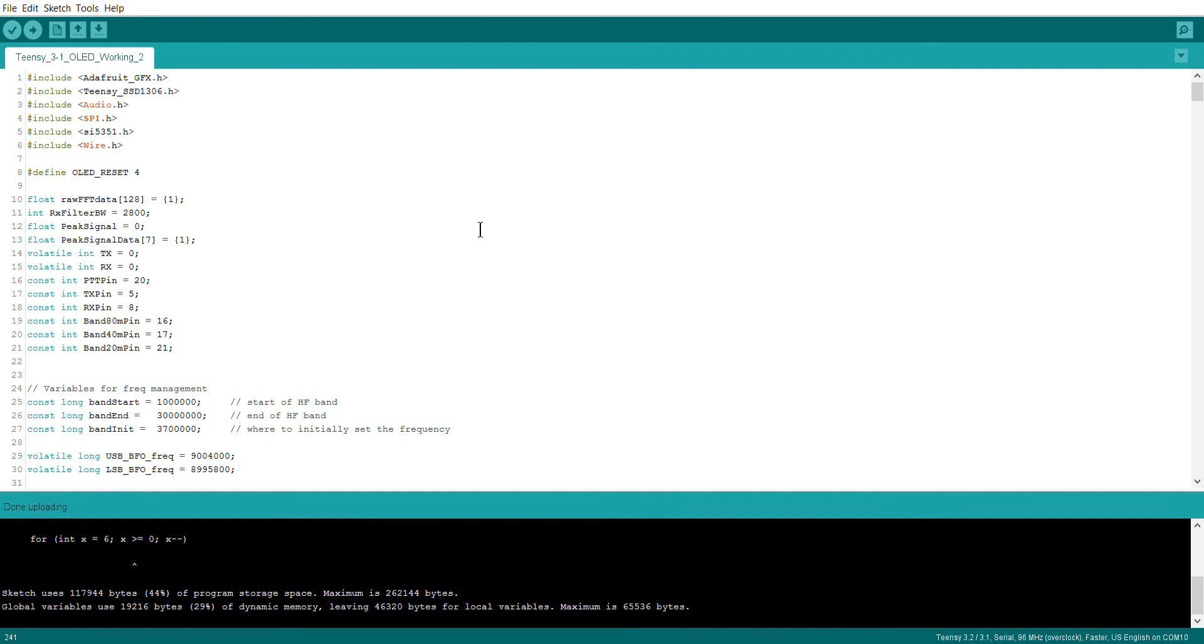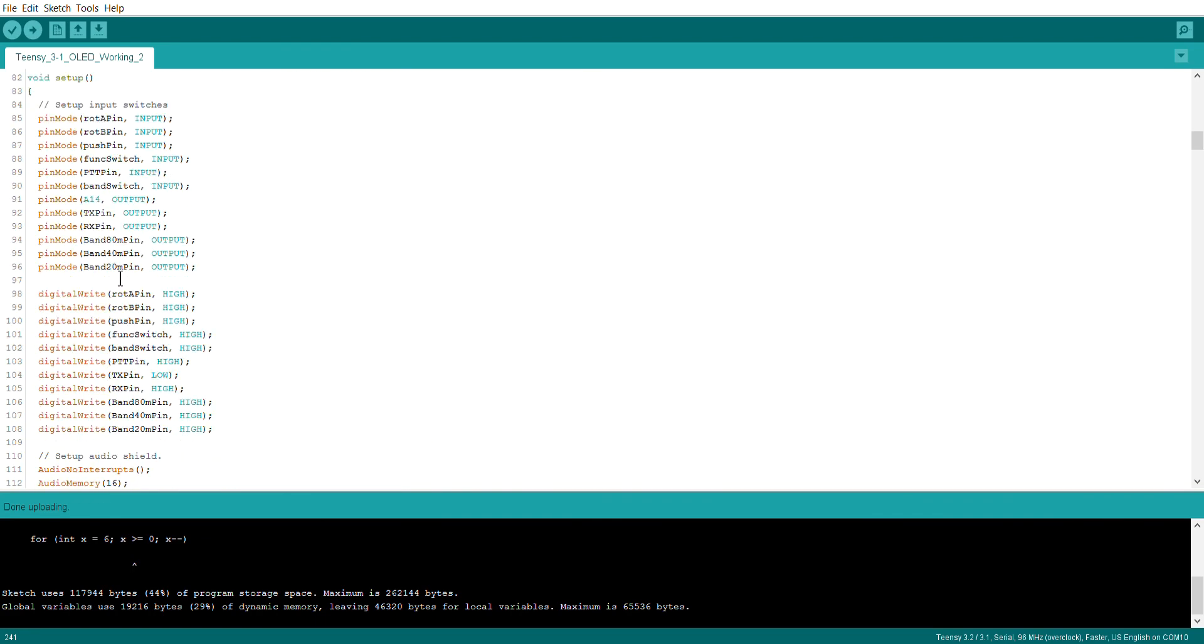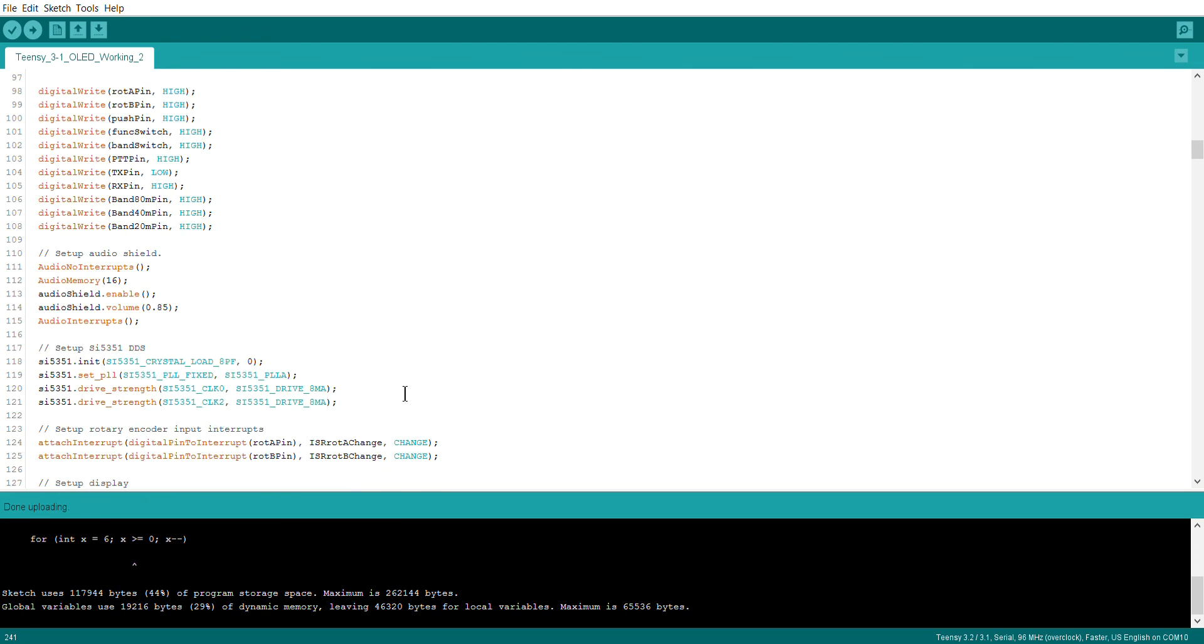So here's a look at the code. All I've done at the end, I've assigned three digital pins. So they're notionally called band 80 pin, 40, and 20, so I had three available pins on the teensy, and they get declared as output pins, and initially set high. So high means that that particular filter is turned off, so this is the initial setting.